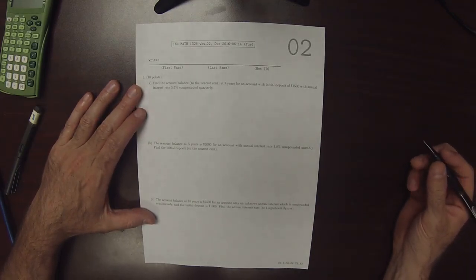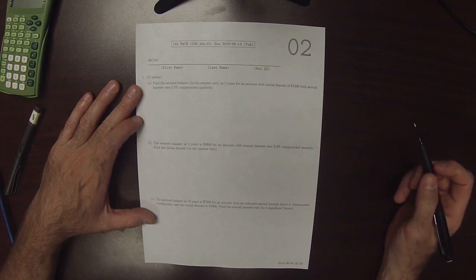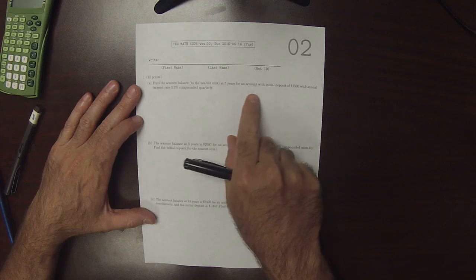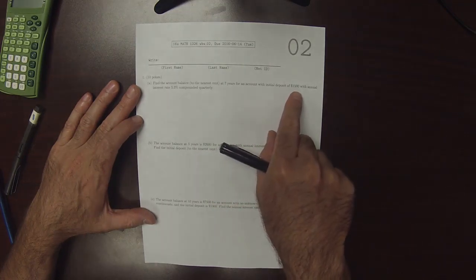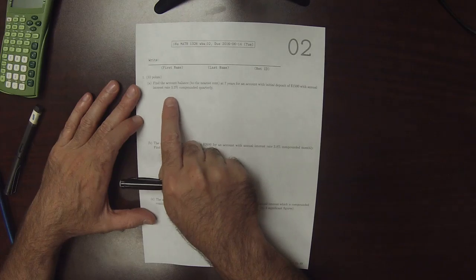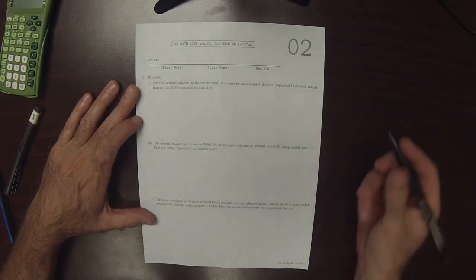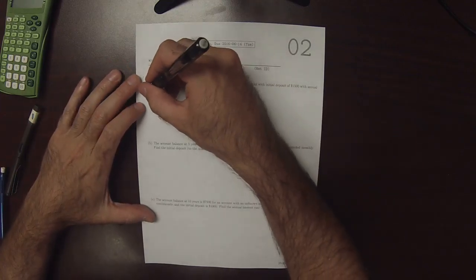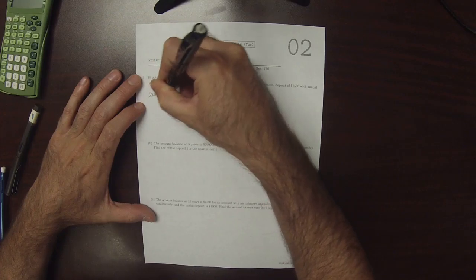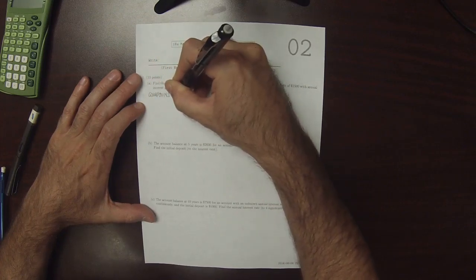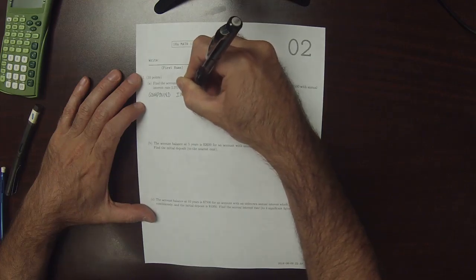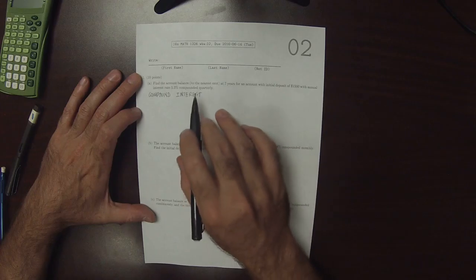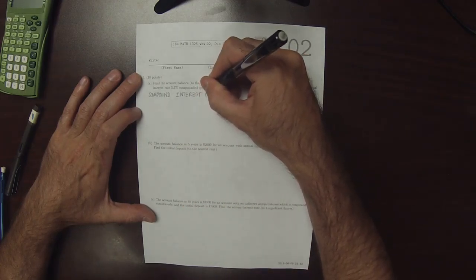This is the key to written homework 2. It says, find the account balance to the nearest cent at 7 years for an account with initial deposit $1,500, annual interest rate 5.3%, compounded quarterly. Okay, so this is a compound interest problem, and we know in particular that it's discrete because it says compounded quarterly.